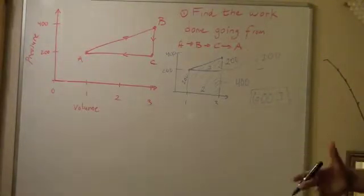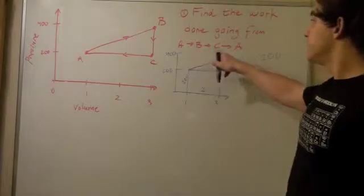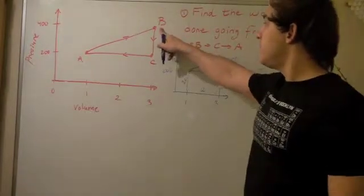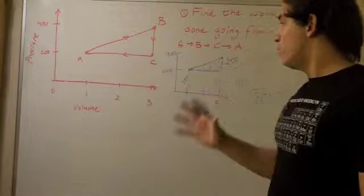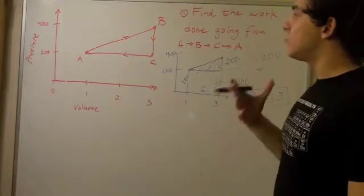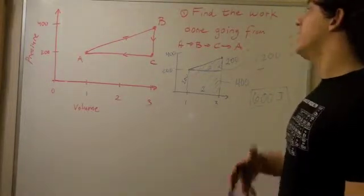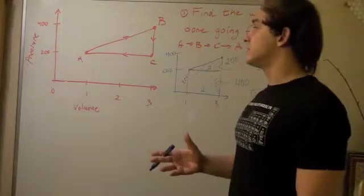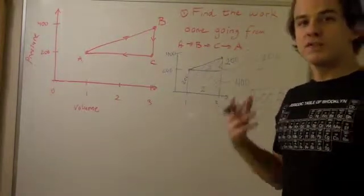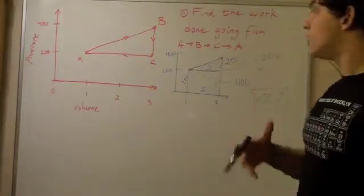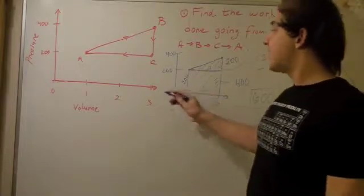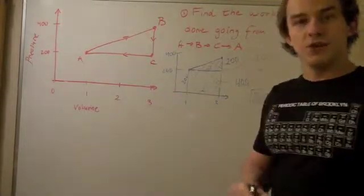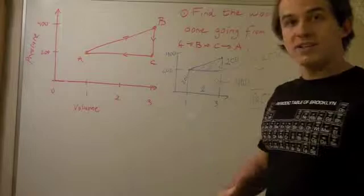How about the work done going from B to C? Well, going from B to C, we first have to ask, is the pressure constant? And the pressure is not constant, so we can't use the formula. But what we could realize is that what is the change in volume? Well, the change in volume is 0.